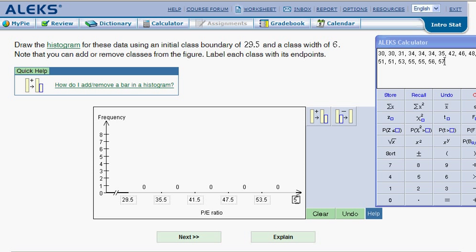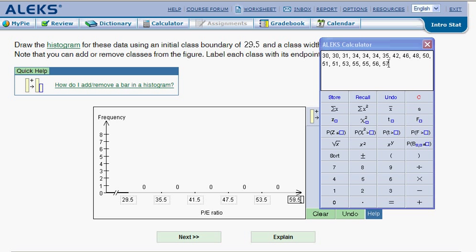Okay, now all of our class boundaries are in place. Now to get the frequencies, we have to go back up here and count the number of numbers, in other words, the frequency, the number of numbers that fall between the 29.5 and the 35.5. Now you can simply just count these right here off of the Alex calculator once they have been sorted. But what happens to me is I usually lose count here and then I get some of the frequencies wrong, which is frustrating.